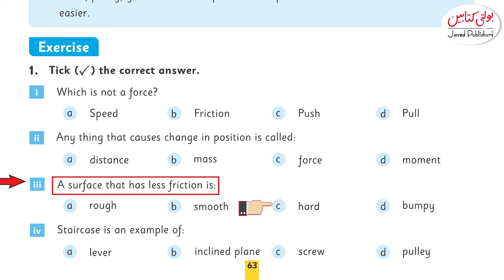A surface that has less friction is: rough, smooth, hard, or bumpy? Aisi surface jiske upar less friction hogi wo kis tarah ki surface hogi — rough, smooth, hard, or bumpy? Yes, you are right — the correct answer is smooth.